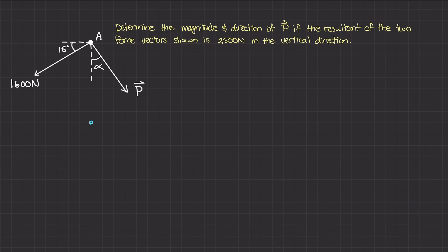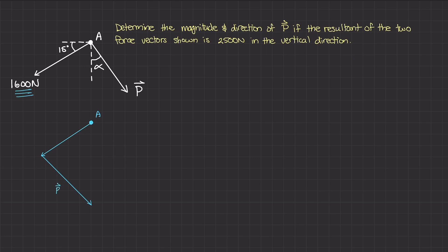Let's redraw point A. The 1600 newton vector is drawn here. Then, if I take the tail of P and add it to the tip of that 1600 newton vector, we get the P vector like this. I've drawn this in a special way because the resultant vector is 2500 newtons in the vertical direction. So the resultant goes from the tail of the 1600 newton vector down to the tip of P, and it is exactly vertical.